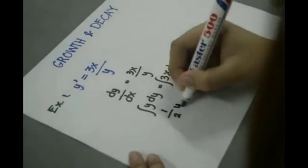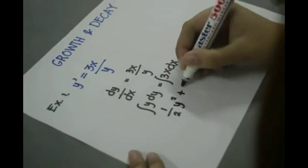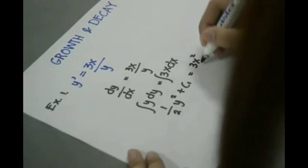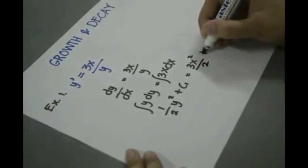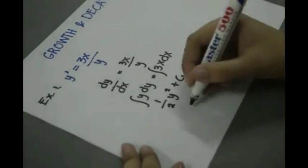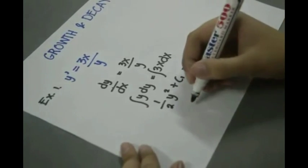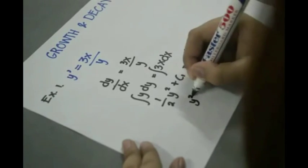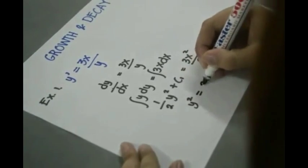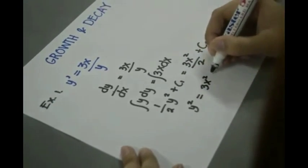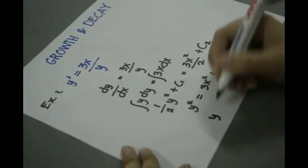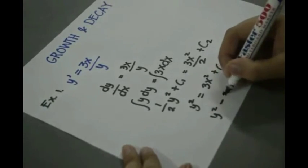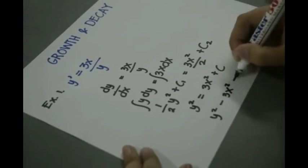One half y squared plus c1 is equal to three halves x squared plus c sub 2. It's not necessary to have constants on both sides. Simplifying: y squared is equal to 3x squared. We will obtain a general form of y squared minus 3x squared is equal to c.